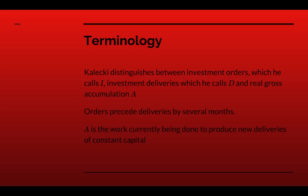Let me describe some of the terminology and variables that Kalecki uses. Kalecki distinguished between investment orders, which he calls I — the placement of an order for a new factory or new plant and equipment — investment deliveries, which he calls D, and real gross accumulation. The important point is that orders precede deliveries by several months. In some industries like shipbuilding, orders precede delivery by maybe a couple of years; other industries are faster, but on average there's a considerable delay. What he calls accumulation is the work currently being done to produce new deliveries of constant capital — the current rate at which it's being done.